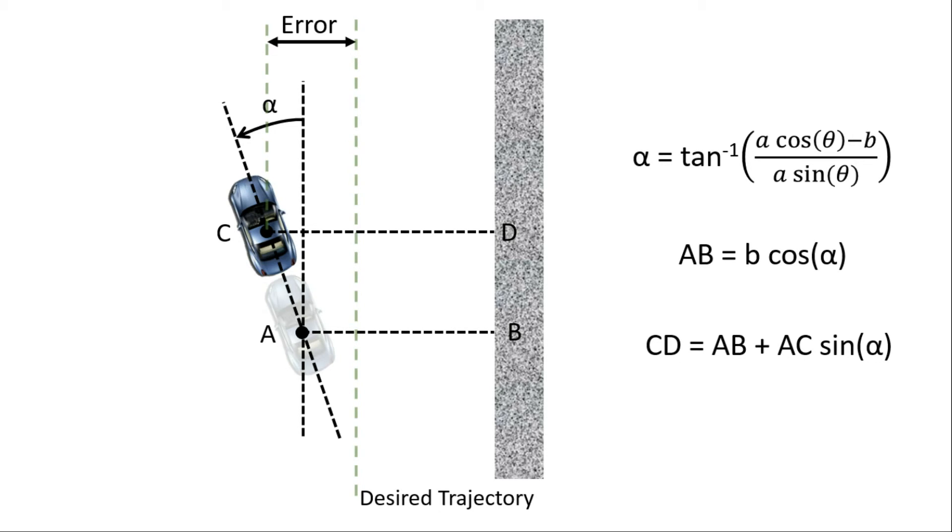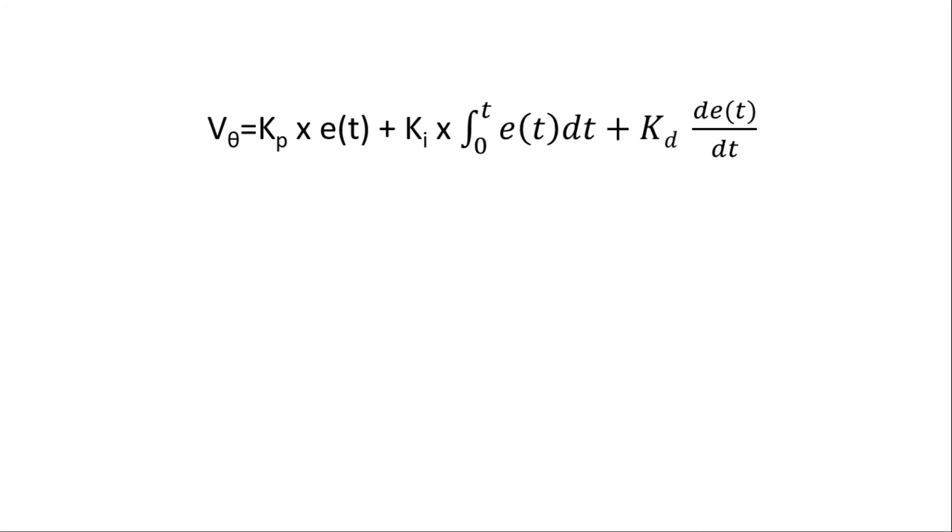Now, let's have a look at the PID equations. This is a standard PID equation where E is the error from the desired trajectory. As seen in the lecture, we will be using only the Kp and Kd controls.